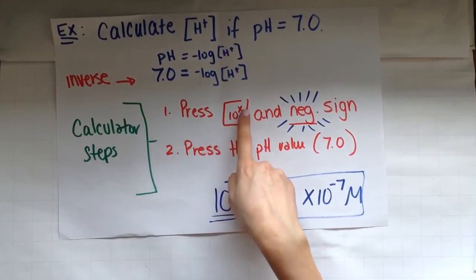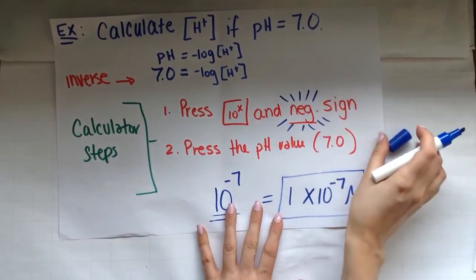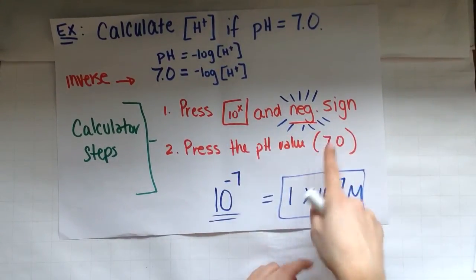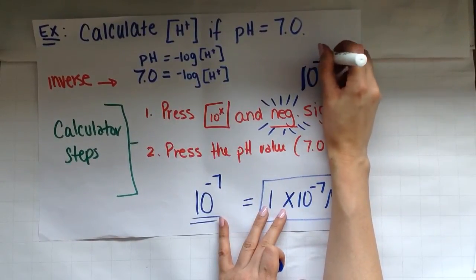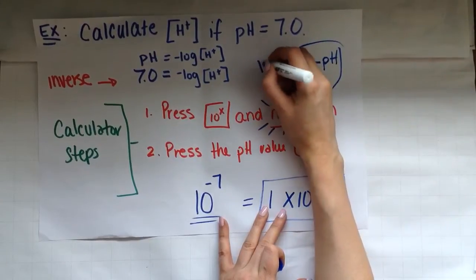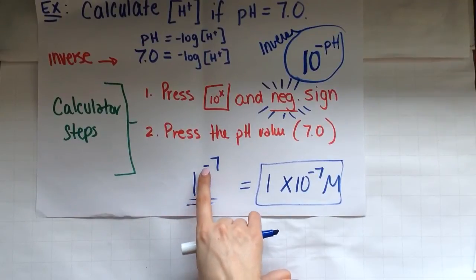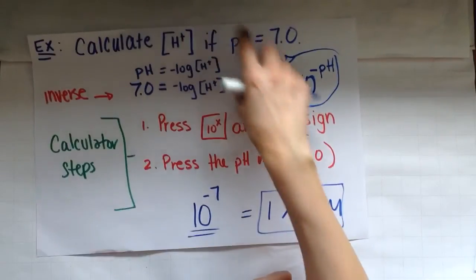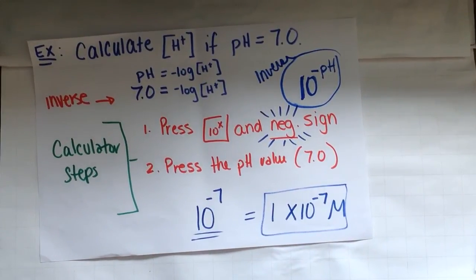So 10 to the negative of the pH. So you want to press 10 to the X button. Find that on your calculator. You might actually just have a button that says 10 to the X, or you might have to press second to get that button. And then you want to put in a negative sign. And then the pH value. So a good way of saying this is 10 to the negative pH is how you do the inverse. So notice I punched in 10 and I raised it to the negative 7 because pH was 7. You have to put in the negative sign.